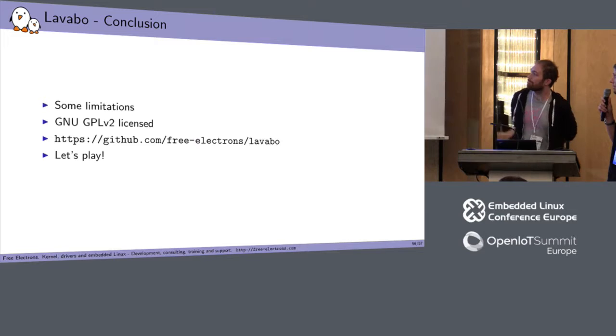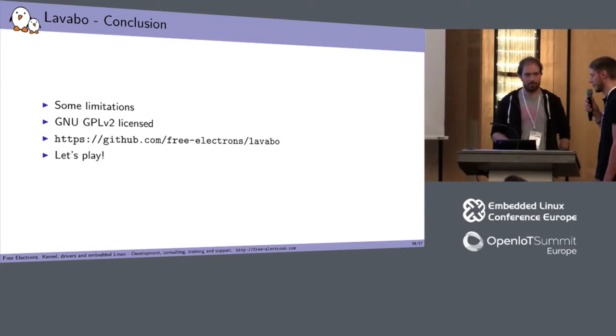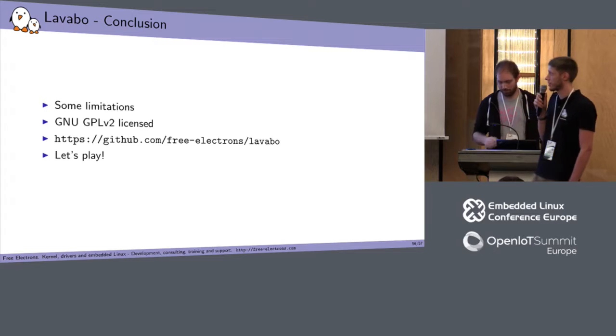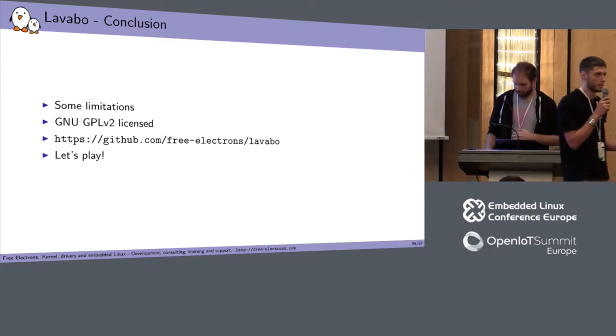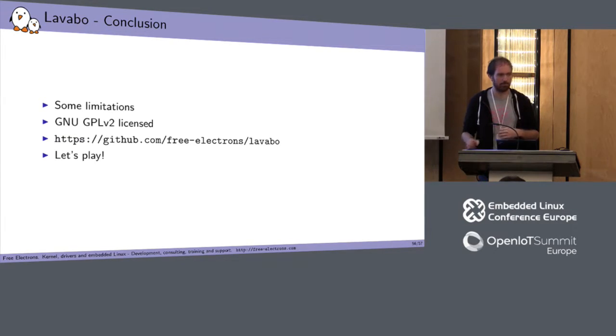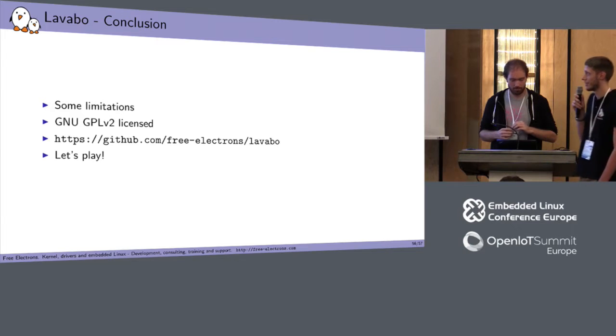Limitations of lavabo: no NFS rootfs support, single-node only — no multiple dispatchers yet. It's GPL v2 licensed and available on our GitHub, along with our LAVA configuration files in a separate repository which you're welcome to use.